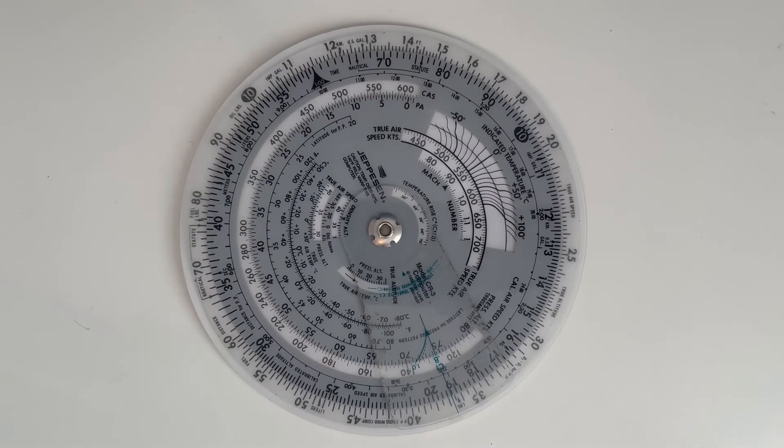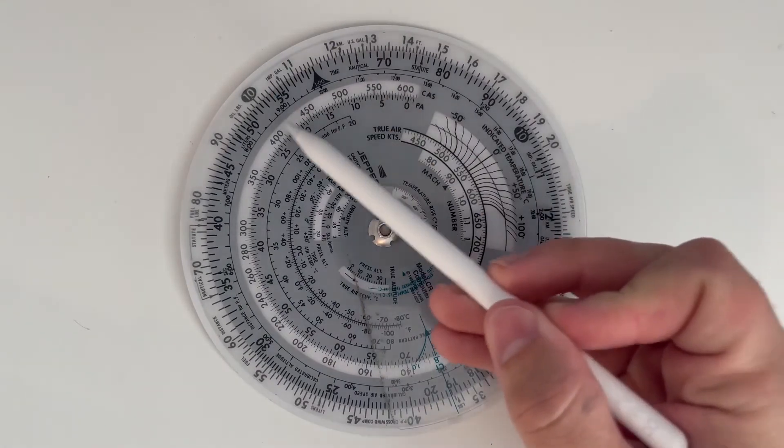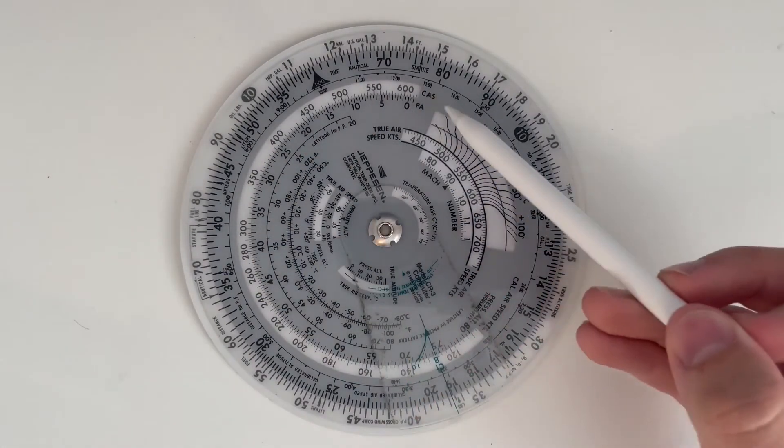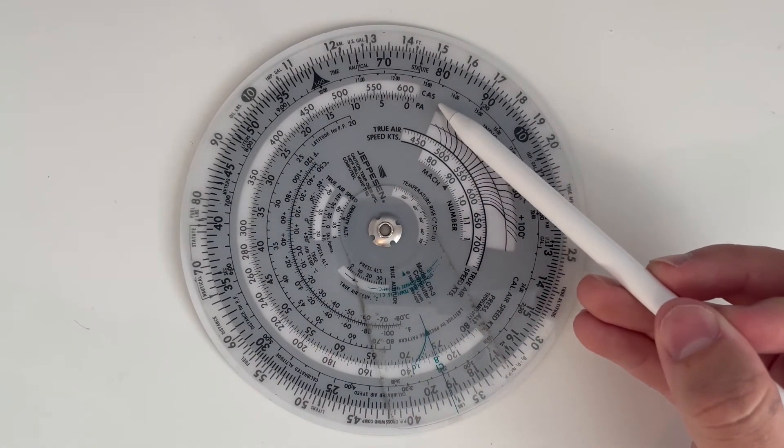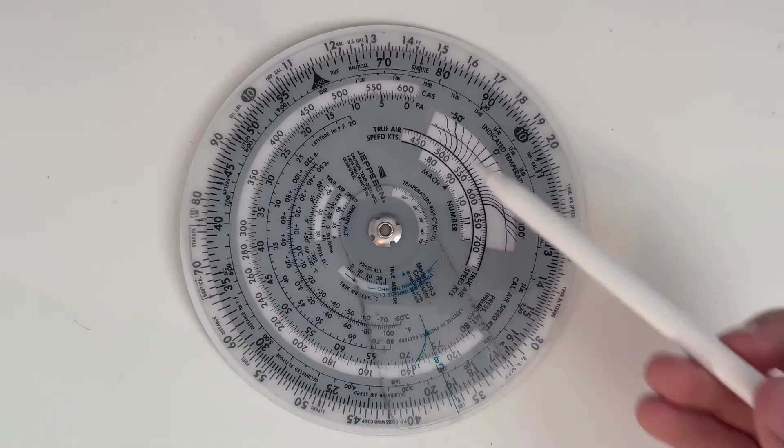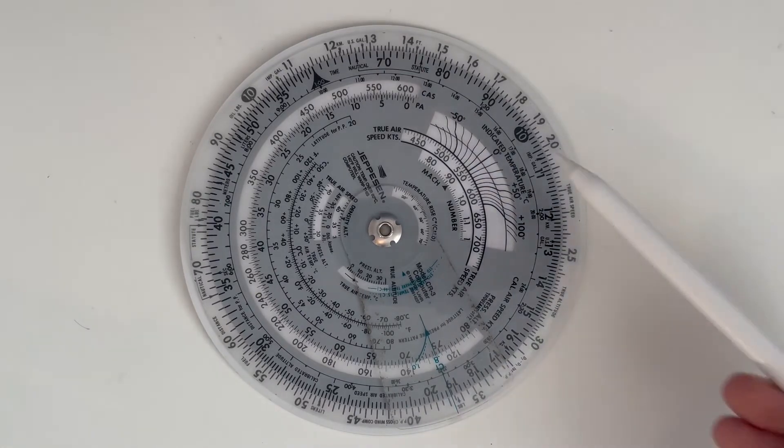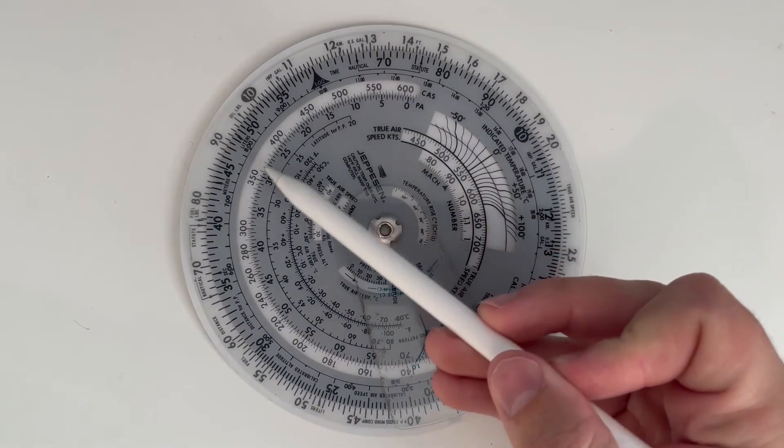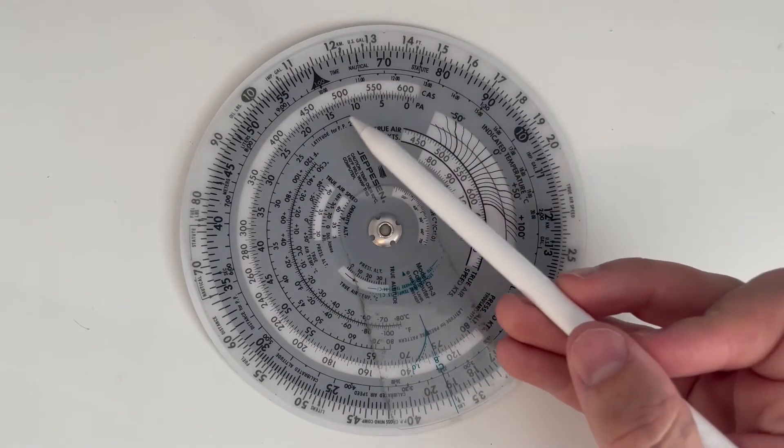Now we have the whiz wheel in front of us. I'm going to point out a couple of things and then we'll get into the example. We have this big window here. This is the calibrated airspeed versus pressure altitude section. Calibrated airspeed for intents and purposes is indicated airspeed, pressure altitude essentially being altitude. So we'll be comparing the calibrated airspeed or indicated airspeed against the altitude.